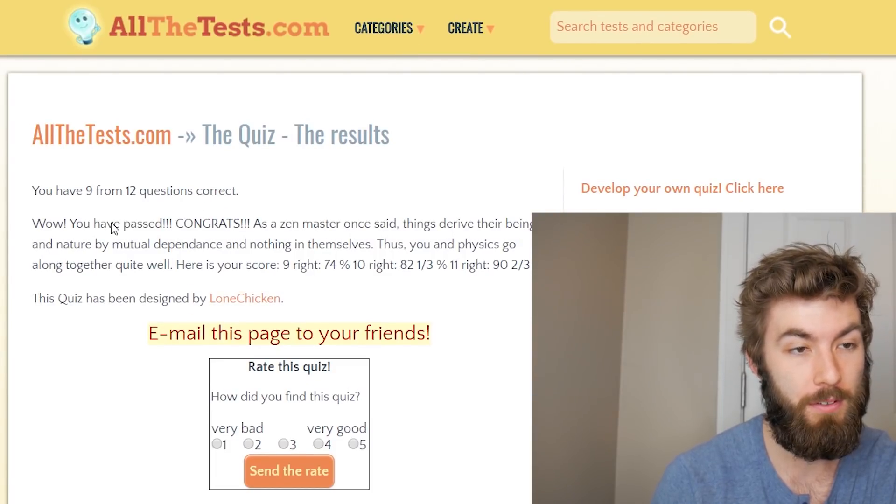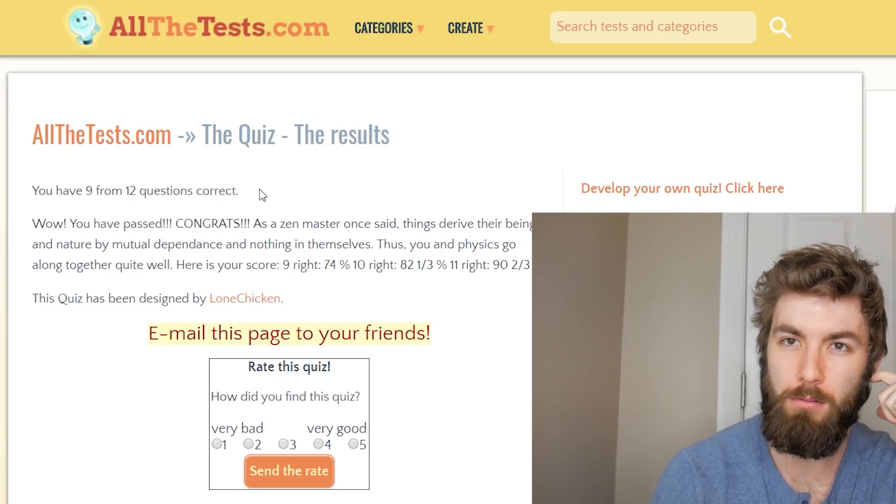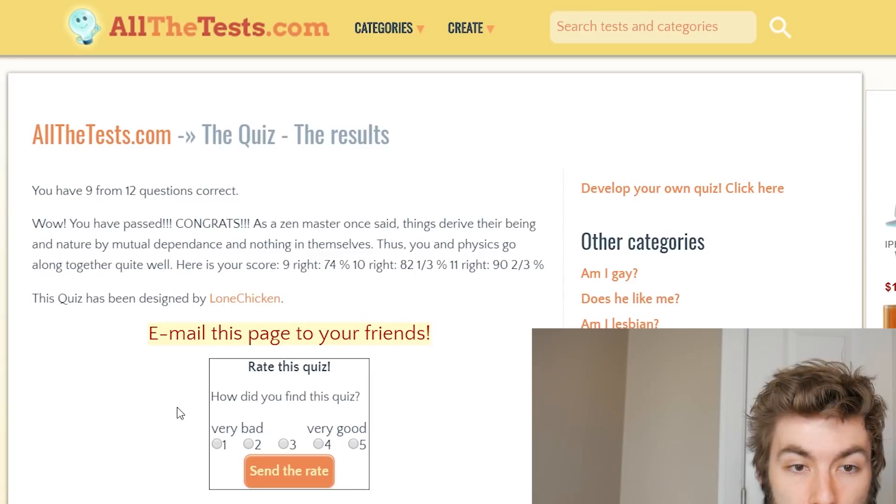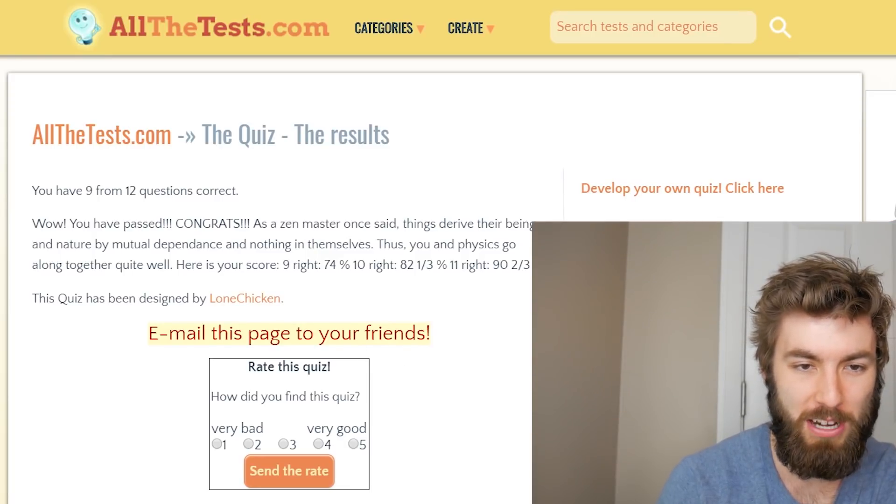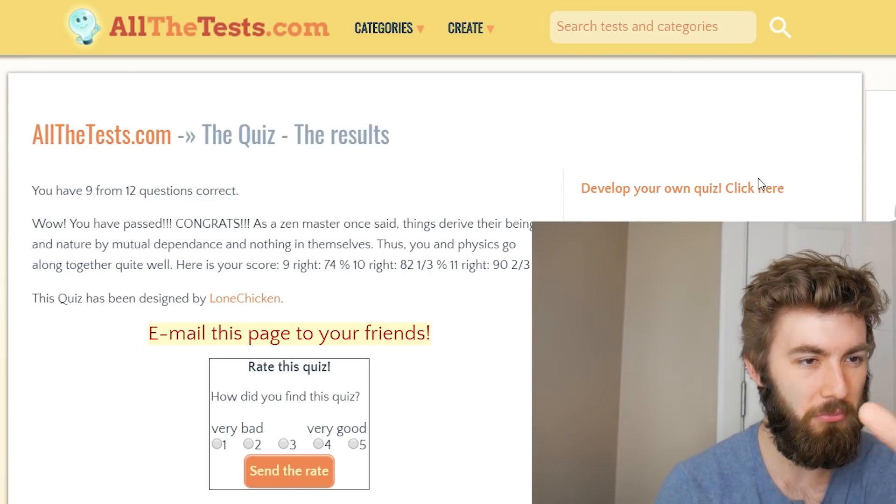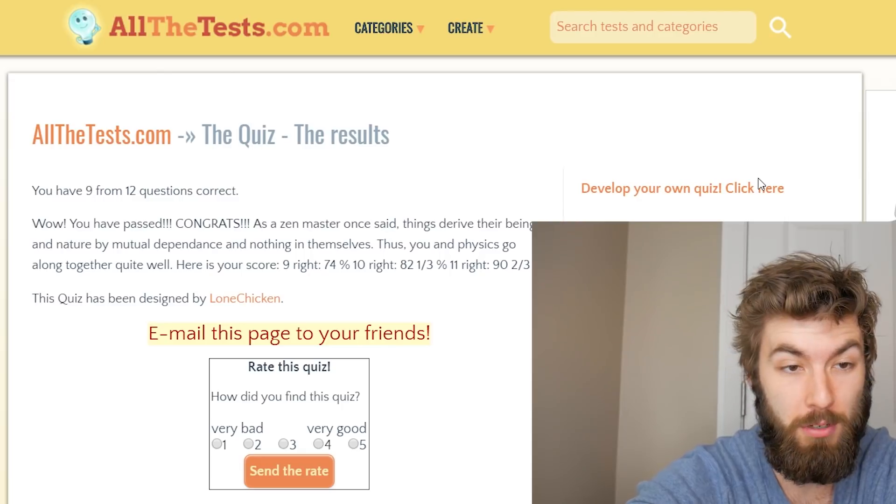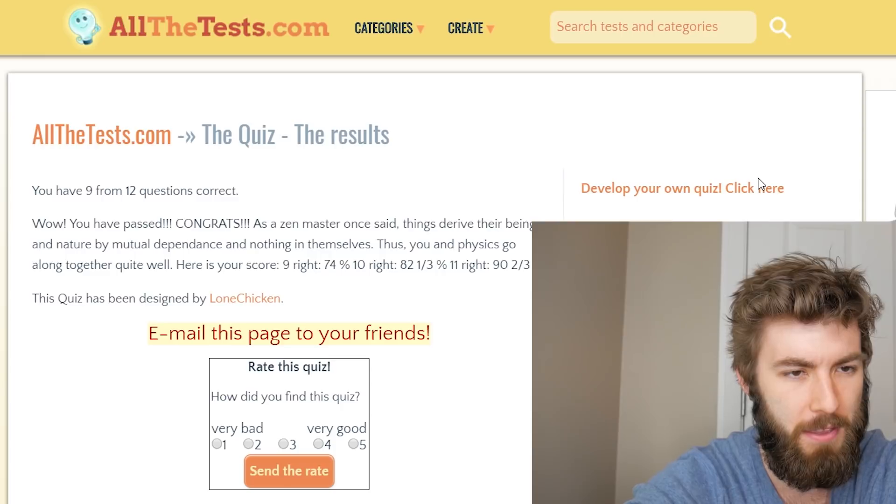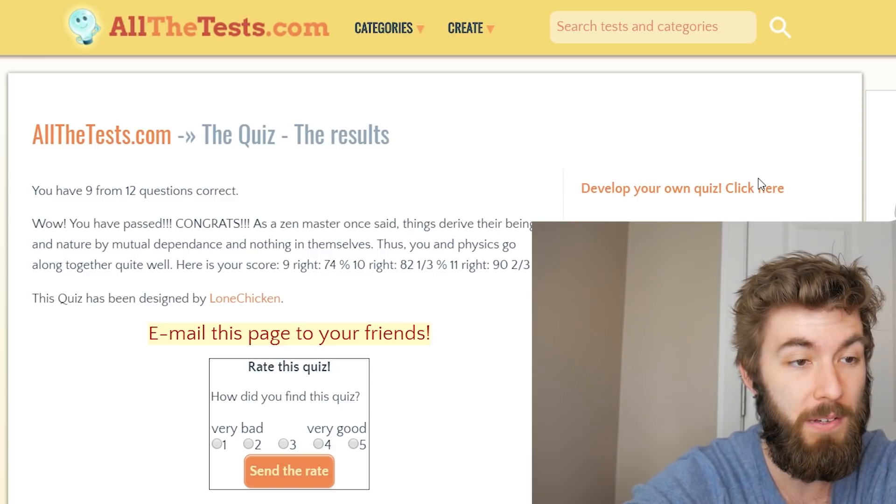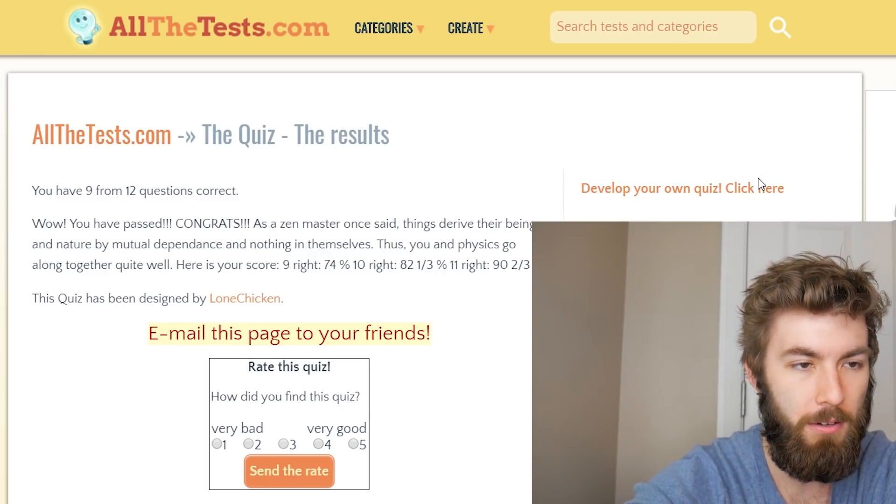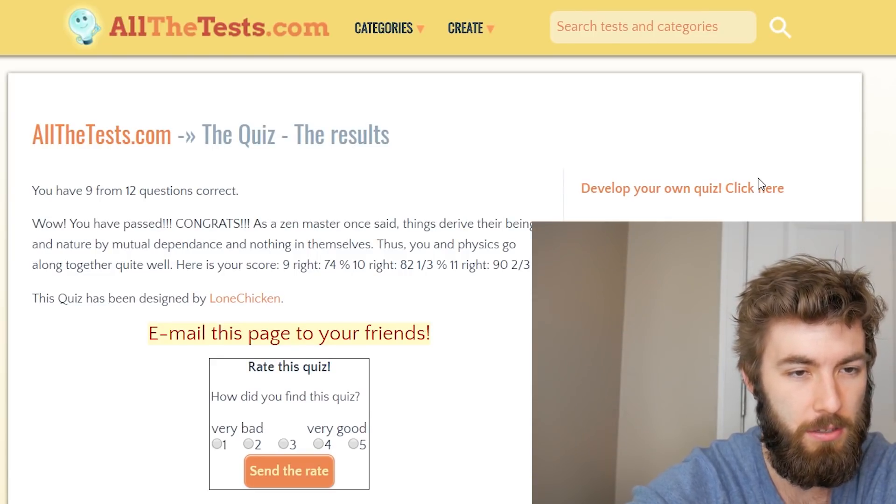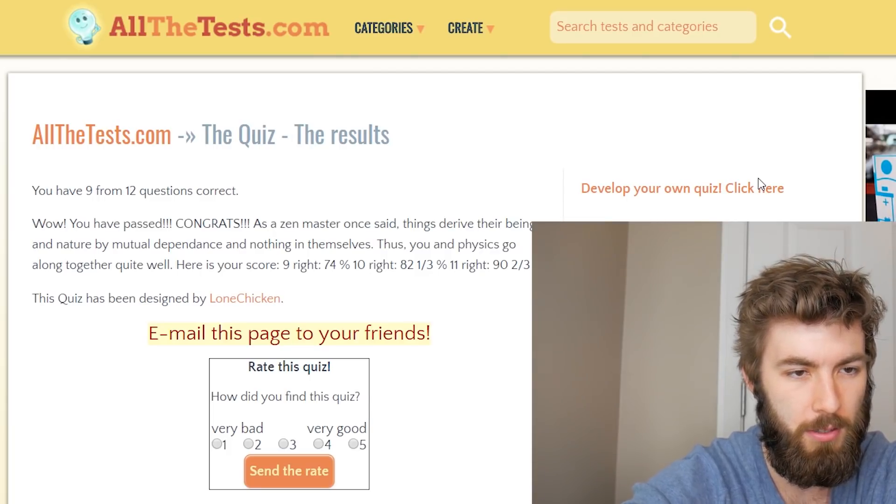Score me. Nine out of twelve. So I missed three. I wonder what three I missed. Oh, it doesn't even tell you. Oh, I can find out if I'm gay. I wonder if that's like the recommended section. Wow, you passed. Congrats. As a Zen master once said, things derive their being and nature by mutual dependence and nothing in themselves. Thus, you and physics go along quite well together. Nice. Here's your score. Nine right, 74%. Ten right, 82.3%. So I got a 74.